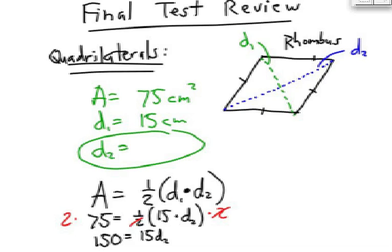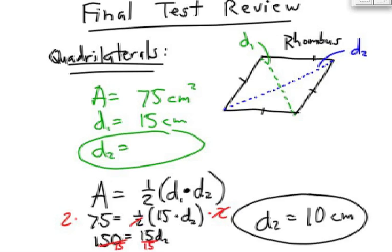Divide each side by 15, and you can see that my answer would have to be 10. The length of the second diagonal is 10 centimeters.